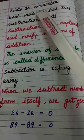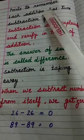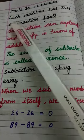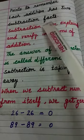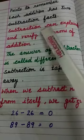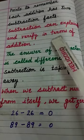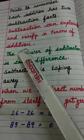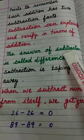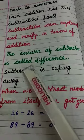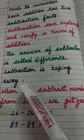So let's revise some important points about subtraction. First point is: each addition has two subtraction facts. Subtraction can be explained and verified in terms of addition. The answer of subtraction is called the difference. Subtraction is taking away.